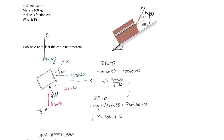Summing forces in x equals zero: negative N sine theta plus P cosine theta — one equation, two unknowns. Summing forces in y: negative mg, positive N cosine theta, positive P sine theta — two equations, two unknowns. Set the first equal to the second, plug it in, and solve for P. That's pretty straightforward.